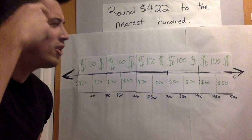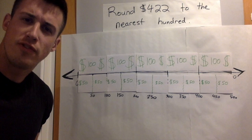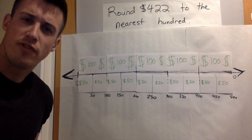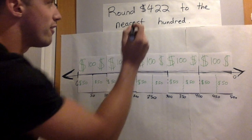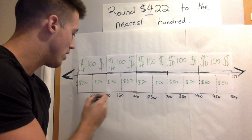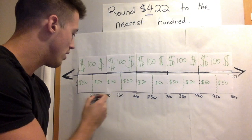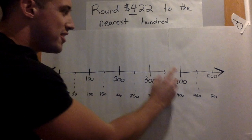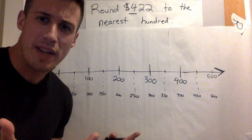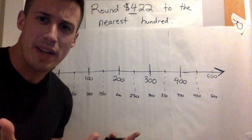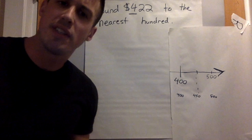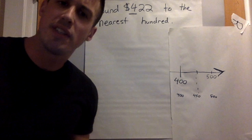Here's my next question: where does $422 go on this number line? I know there's $400, so it goes somewhere near $400. Let me count up: $50, $100, $150, $200, $250 — here's $400. So $422 must go somewhere around here, just above $400. I don't need the rest of the number line anymore — it'll confuse me.